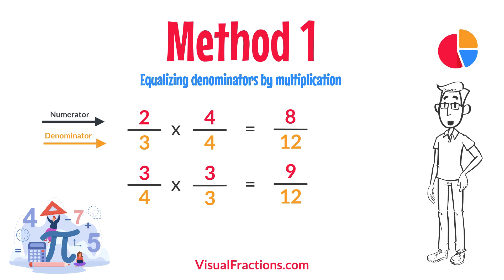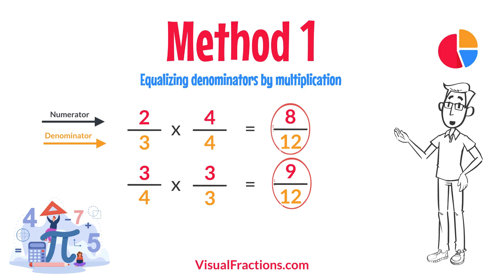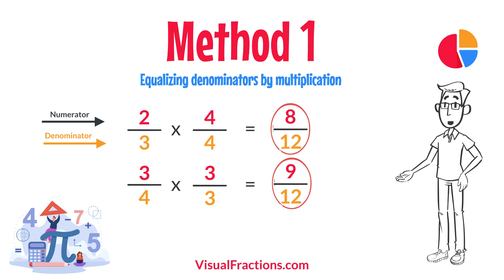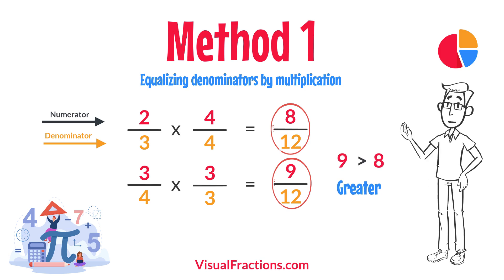Now, with both fractions expressed with a denominator of 12, we can easily compare them. Comparing these, 9 twelfths is greater than 8 twelfths, so 3 quarters is the larger fraction.